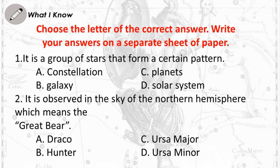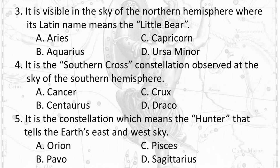Question 2: It is observed in the sky of the northern hemisphere, which means 'the Great Bear.' A. Draco B. Hunter C. Ursa Major D. Ursa Minor.